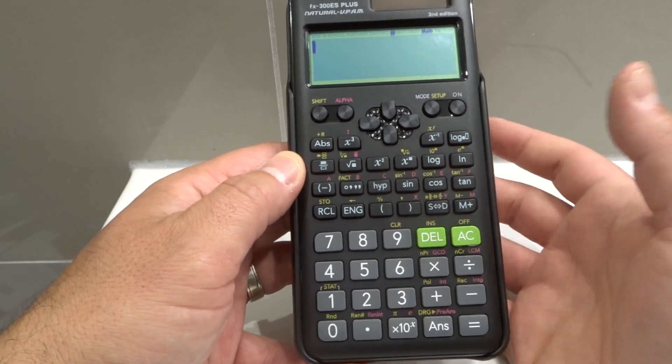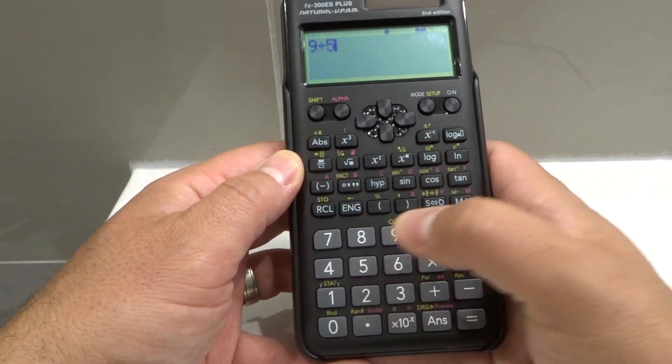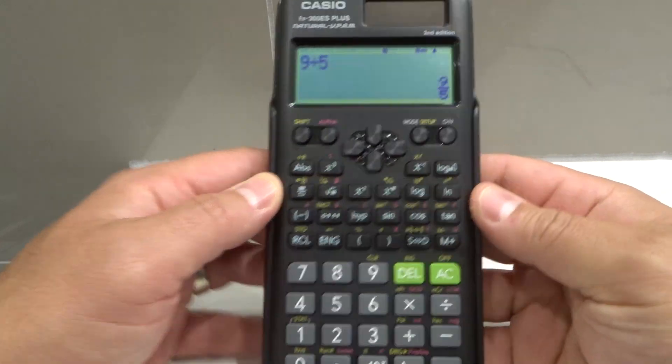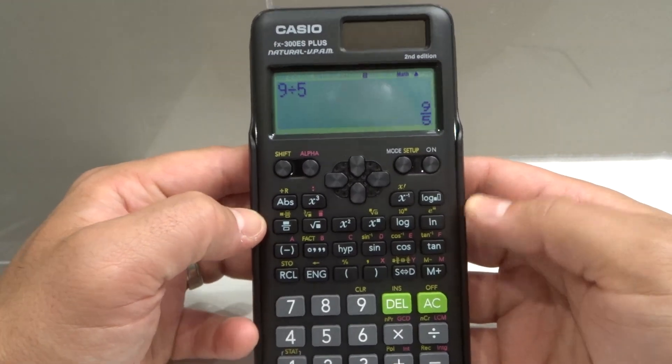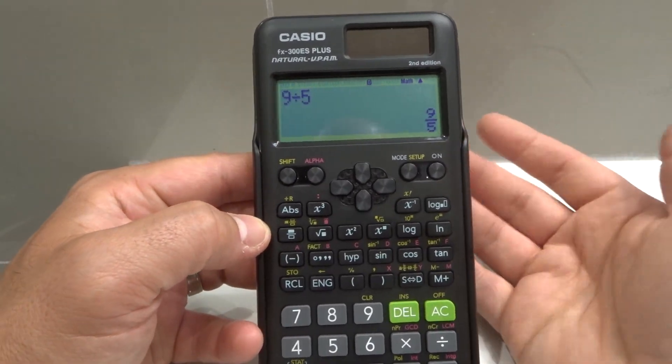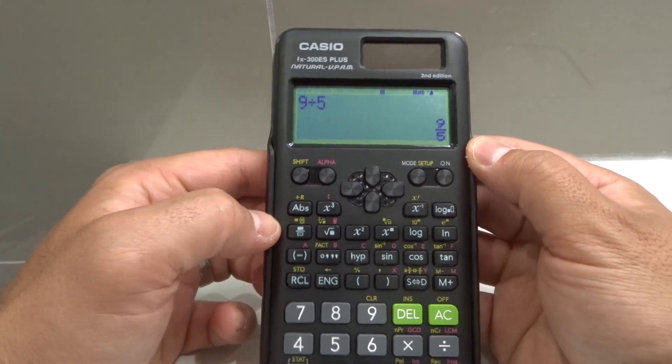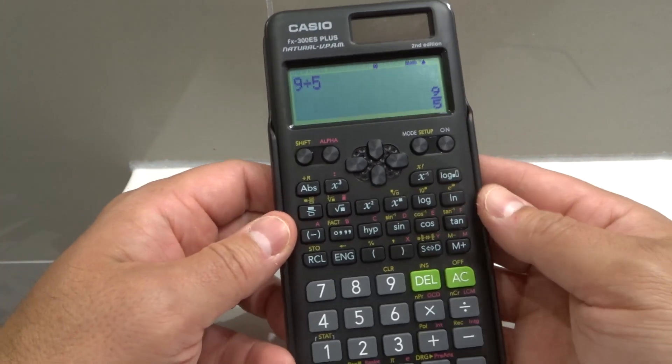We're going to do a simple math equation: 9 divided by 5. So 9 divided by 5 equals, and you can see it's giving me a fraction as an answer, 9 over 5. That is a correct answer, but let's say you want a decimal, which most likely you are going to want.